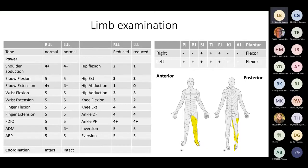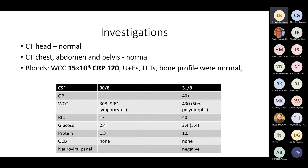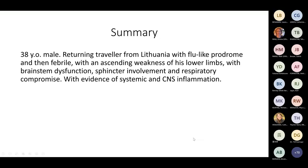CT head, CT chest and pelvis were normal. Blood tests showed raised white cell count and raised CRP. CSF showed inflammation — elevated white cell count, mostly lymphocytes, and elevated protein, though not profoundly. A subsequent CSF showed an opening pressure of over 40 centimetres of water — very high. In summary: a 30-year-old returning traveller from Lithuania with flu-like illness developing ascending weakness predominantly in the lower limbs with brainstem dysfunction, sphincter involvement, and respiratory compromise, with evidence of systemic and CNS inflammation.